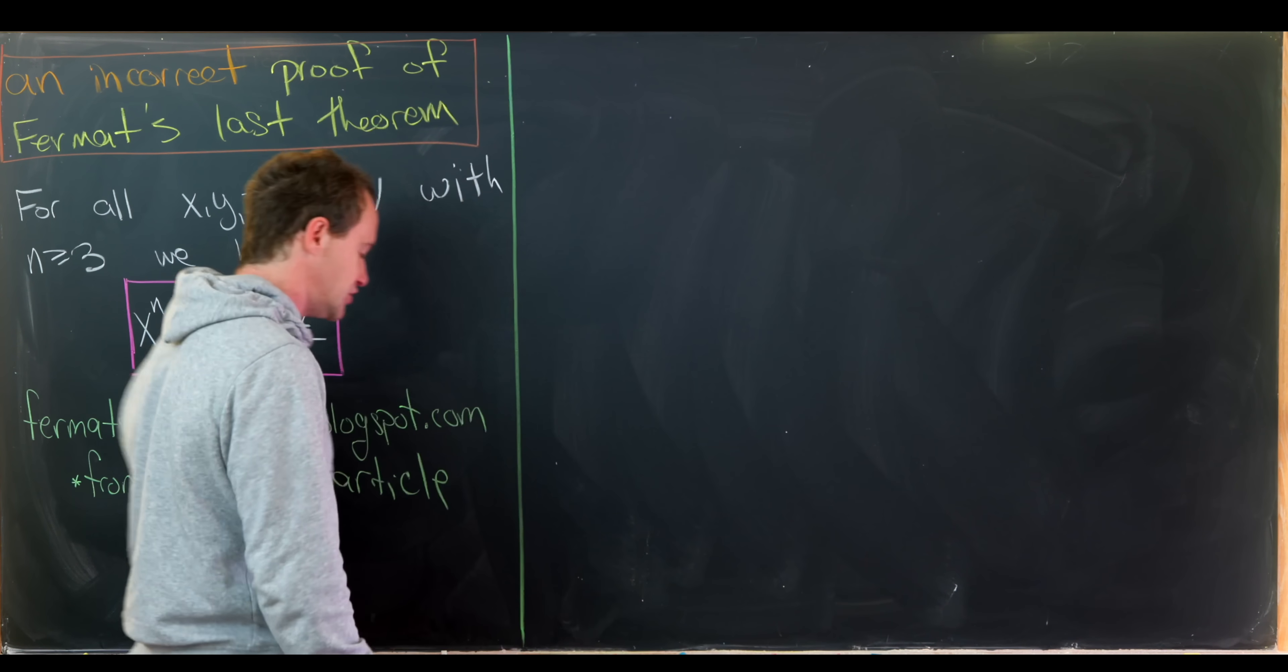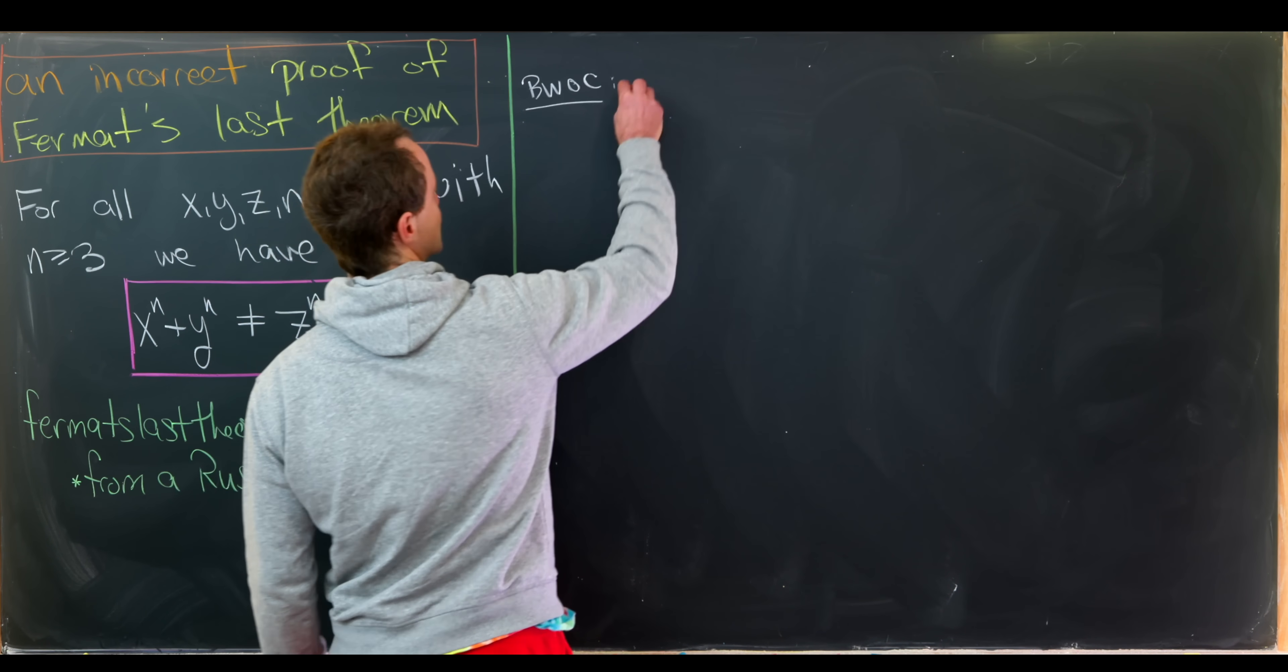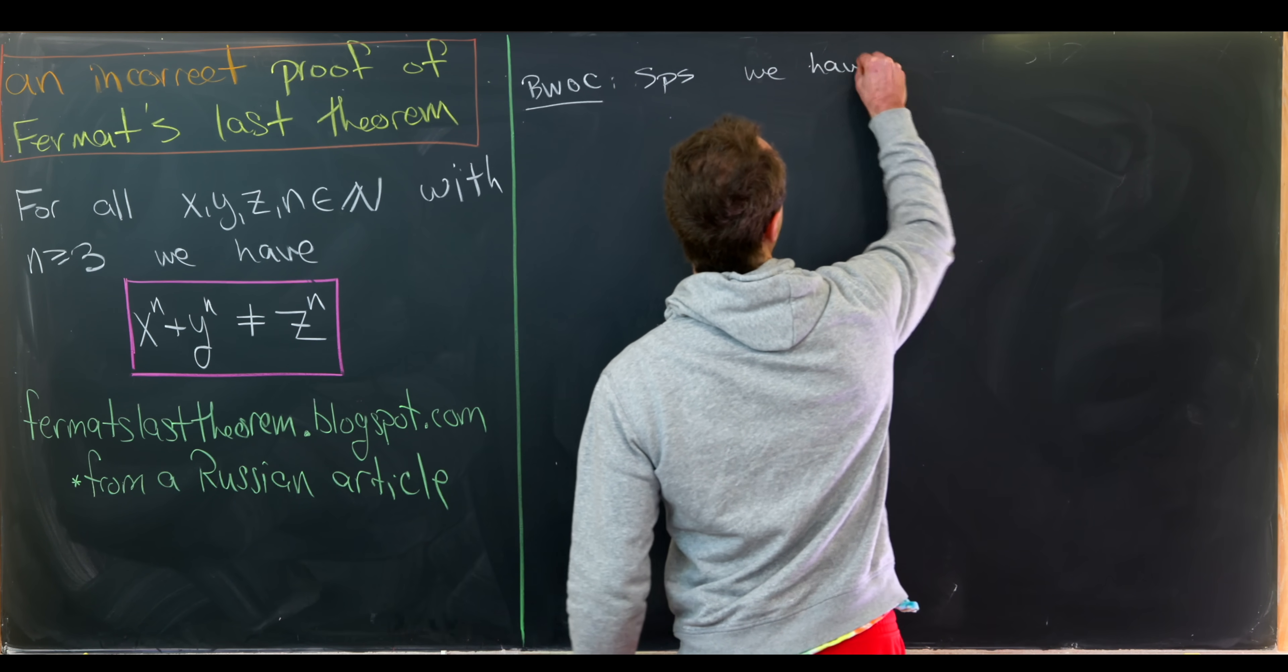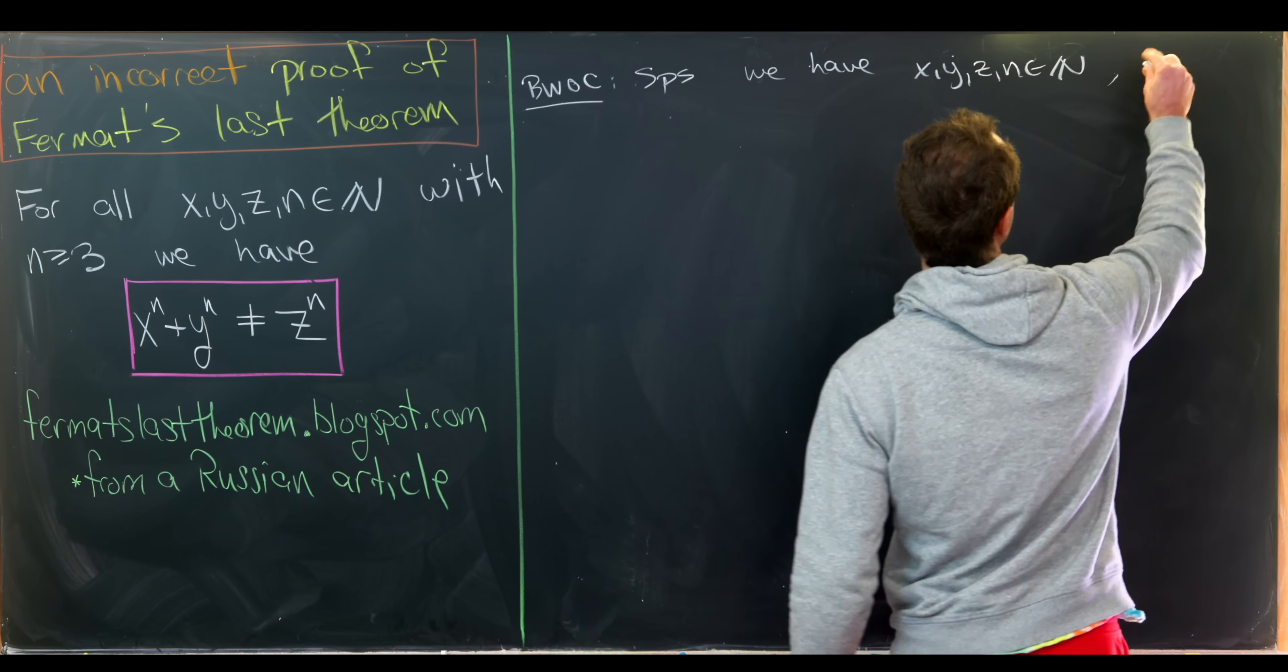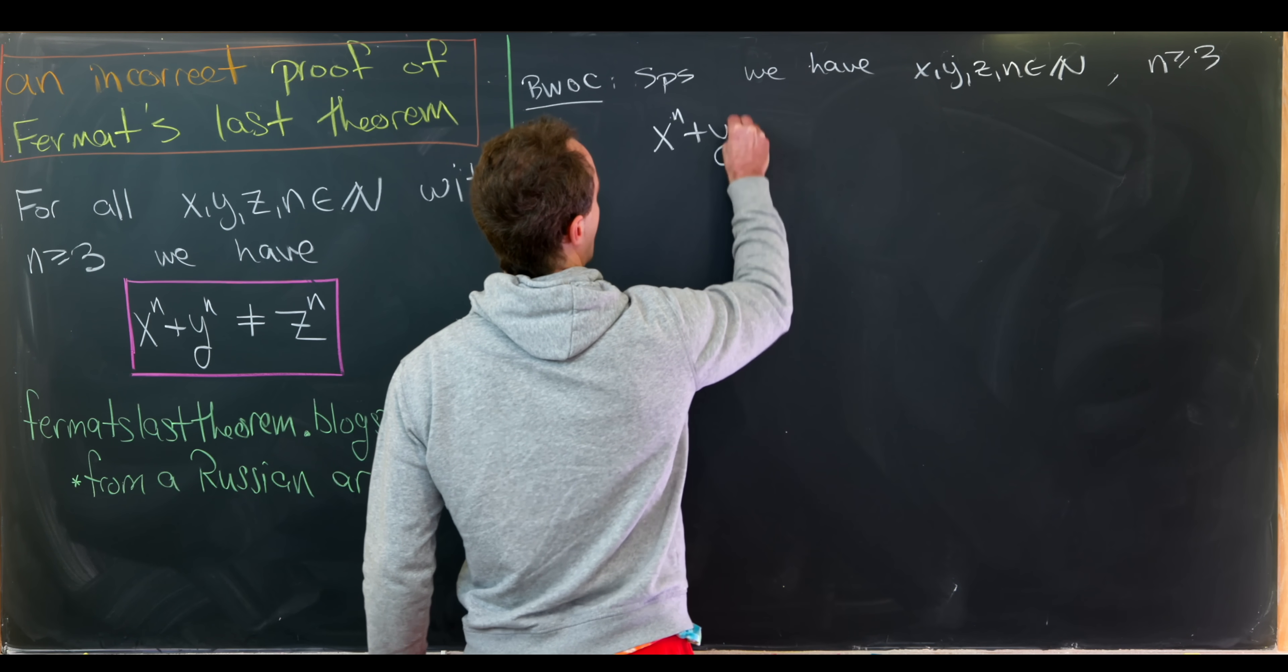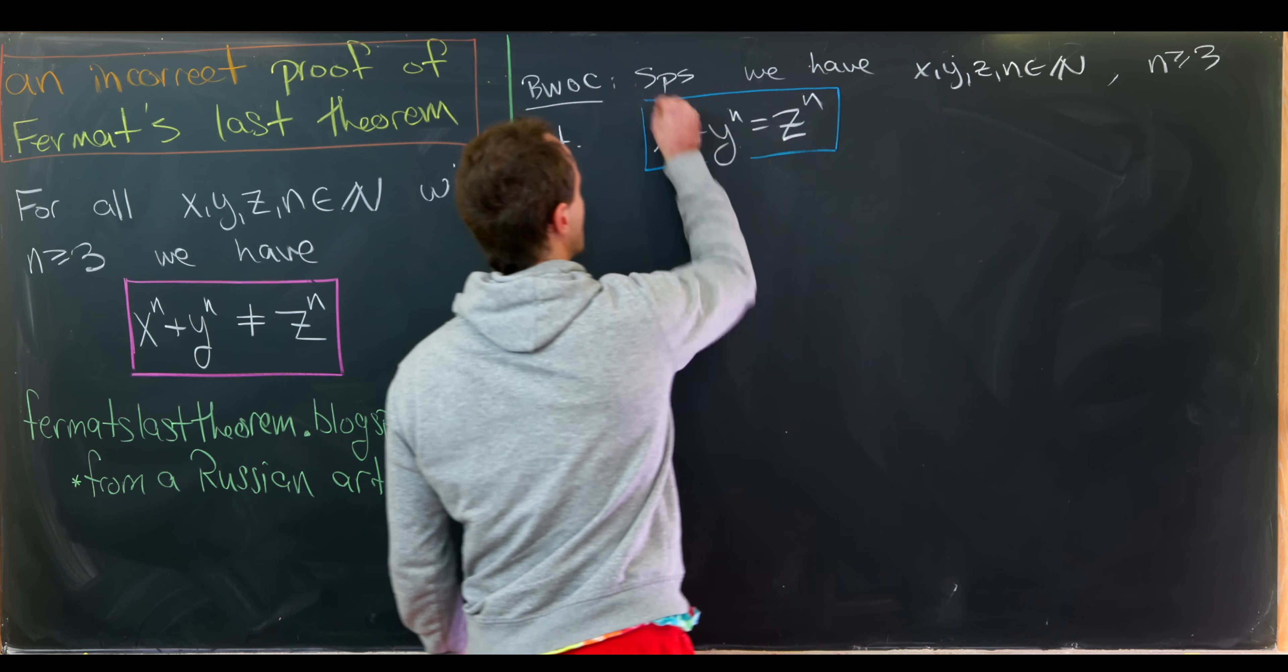Okay, so anyway, let's get into our incorrect proof. So we're going to start by working towards a contradiction. In other words, we will suppose that we have numbers x, y, z, and n, which are natural, n is bigger than or equal to 3, such that x to the n plus y to the n equals z to the n. Now let's see where we go wrong.